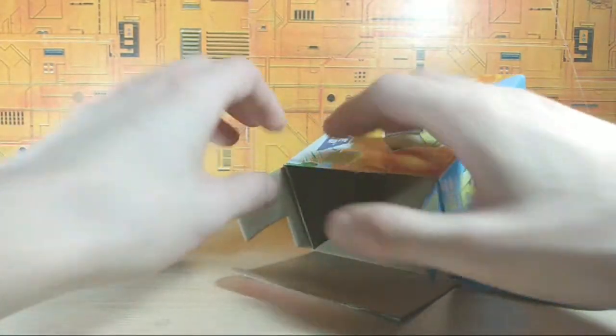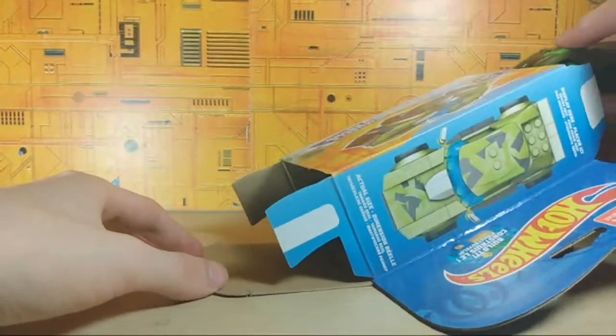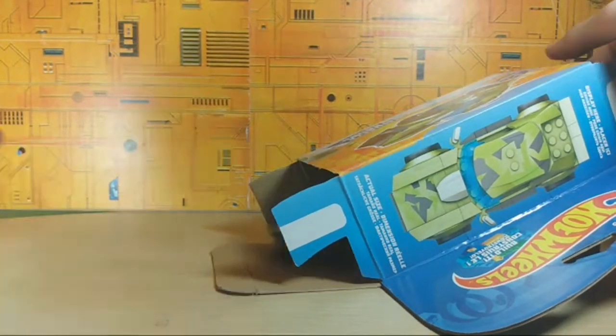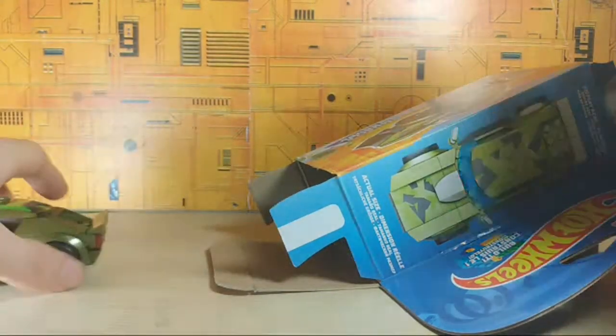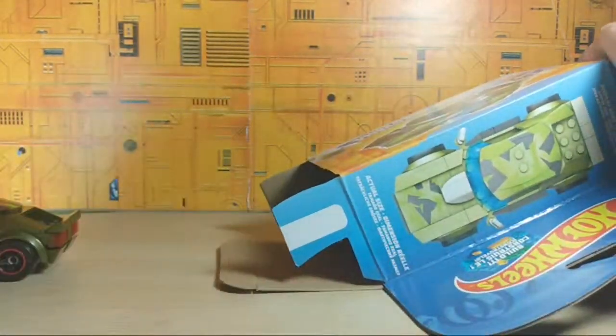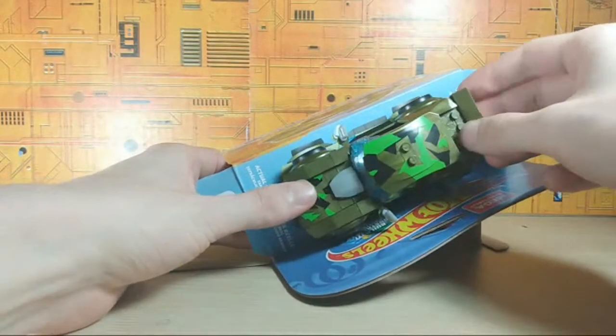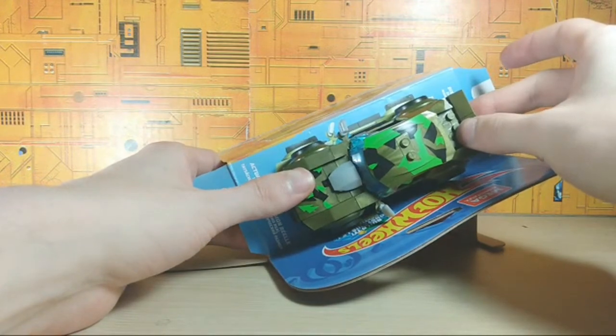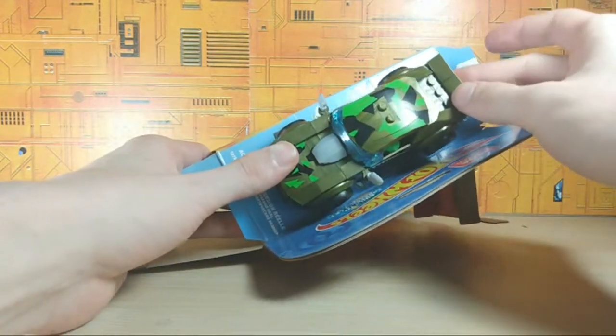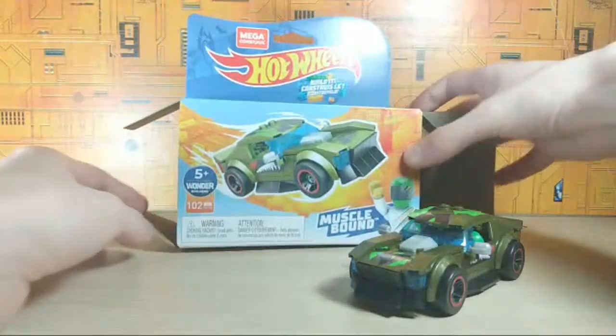I guess I can open these up a little bit more. Open this up a little bit more. Maybe that will be easier. Let's try that again. Let's give it a little push. And this is better. But yeah. Let's see the actual size. The actual size is pretty close. I don't know. Okay. So, that is the Hot Wheels Muscle Bound.